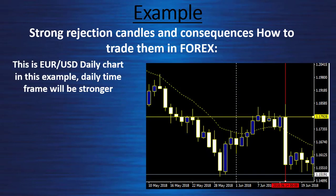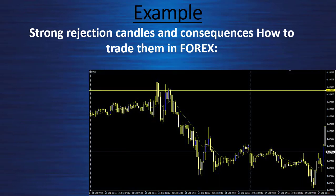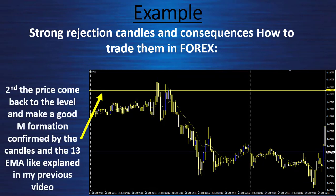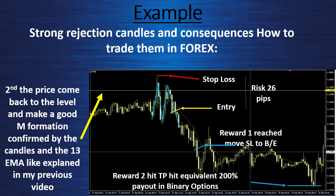Let's look at a detailed example. This is the EURUSD daily chart. The daily time frame will be stronger. I find this very big bearish candle — first I define a strong resistance or support from a big candle at a turning point. Then I go to the 15-minute chart. When the price comes back to the level, I see it touch and make a nice M formation confirmed by the 13 EMA. My entry is there, my stop loss is here, and my risk is 26 pips. When the price reaches 26 pips I move my stop loss to break even at my entry point, and I let the trade run until it touches the 200% payout — the reward of 2 — which is 52 pips on this specific example.